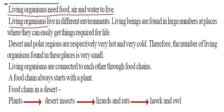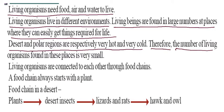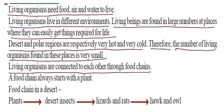Second point: living organisms live in different environments. Living beings are found in large numbers at places where they can easily get things required for life. Desert and polar regions are respectively very hot and very cold, and therefore the number of living organisms found in these places is very small. Living organisms are connected to each other through food chains. A food chain can always start with a plant.